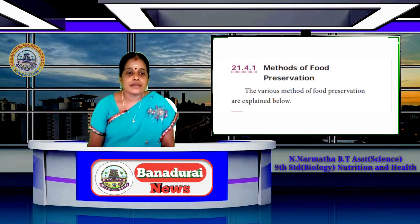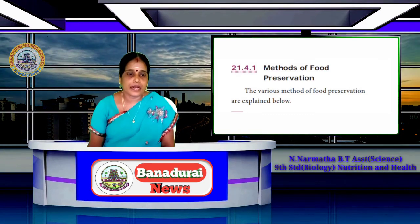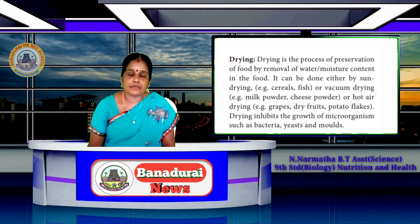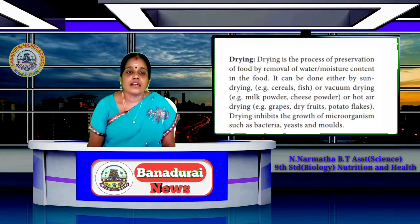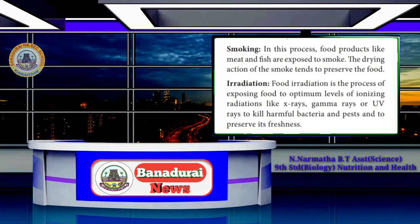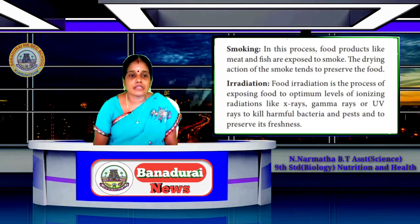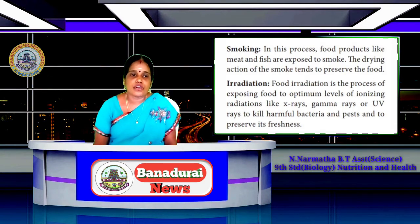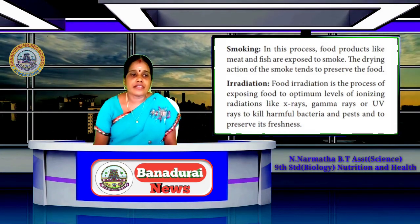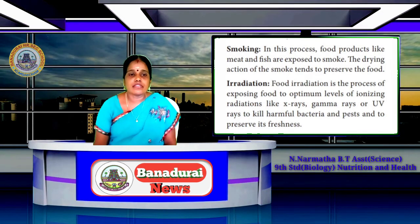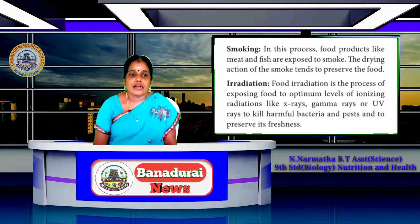The second method is smoking. Smoking is the process of exposing food products like meat and fish to smoke. Another method is radiation, using x-rays, gamma rays, and UV rays, which kill harmful bacteria and pests.